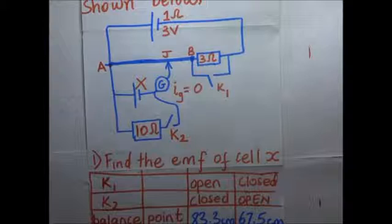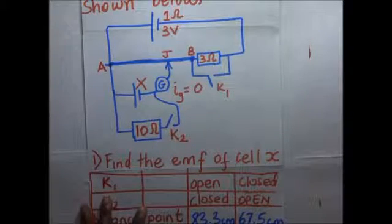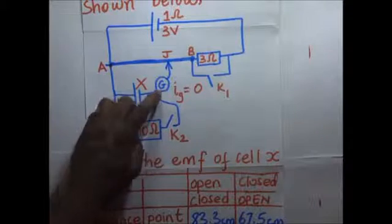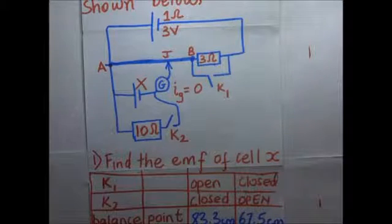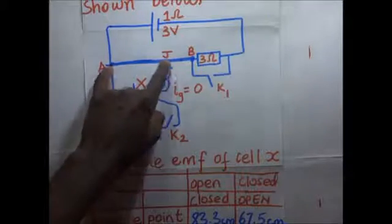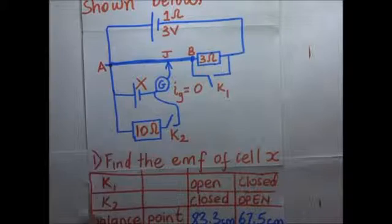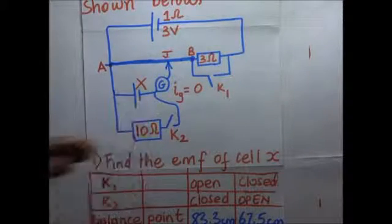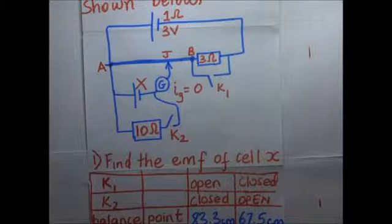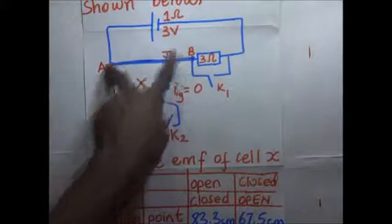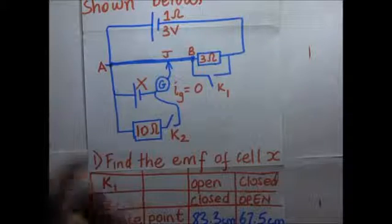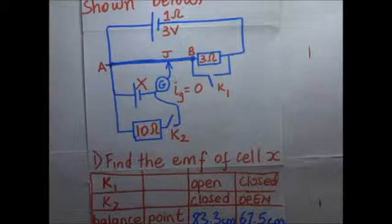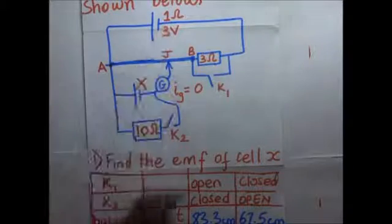When we move that jockey along wire AB, there will be a position where no current is going through the galvanometer — when IG equals zero, that is what we call the balance point. When that balance point is reached, the potential difference across AJ is going to be the same as the EMF of cell X. So the first thing we need to find is the PD per unit length of this wire. PD per unit length V equals I, the driver current, times the resistance per unit length.